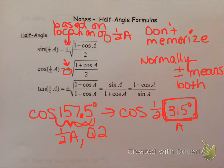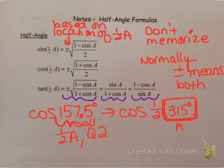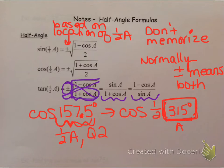The other thing I want to comment on before we start these examples: notice that tangent has three different identities to choose from. I would strongly urge you to completely stay away from the first one. There's a wide variety of reasons: first, you'd have to deal with the plus or minus; second, you have an enormous radical; and third, inside that enormous radical you have two terms in the denominator, and fractions are always harder when there's more terms in the denominator.